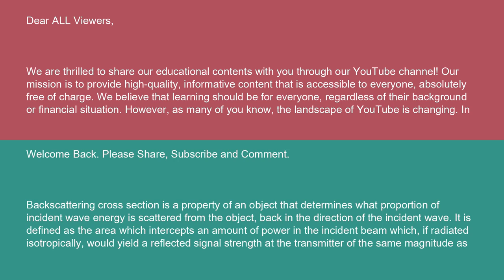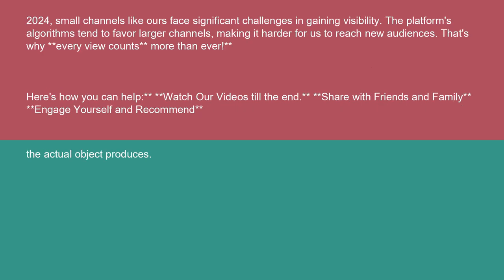Backscattering cross-section is a property of an object that determines what proportion of incident wave energy is scattered from the object back in the direction of the incident wave. It is defined as the area which intercepts an amount of power in the incident beam which, if radiated isotropically, would yield a reflected signal strength at the transmitter of the same magnitude as the actual object produces.